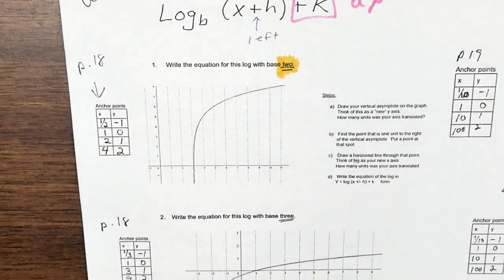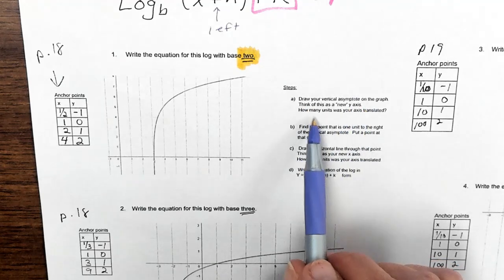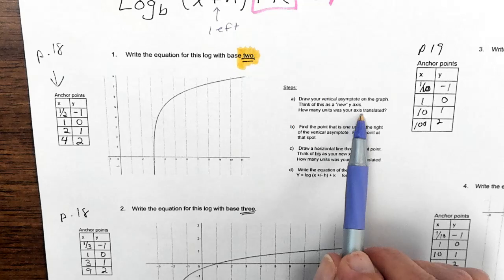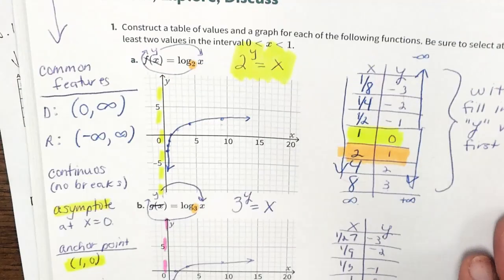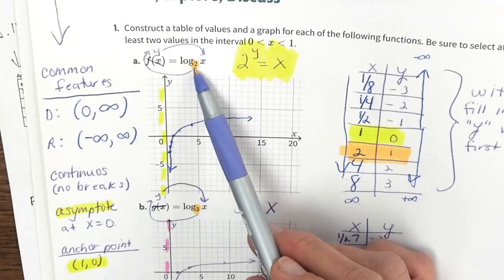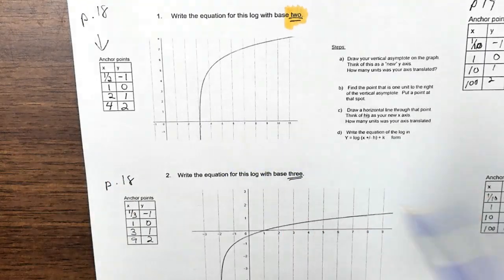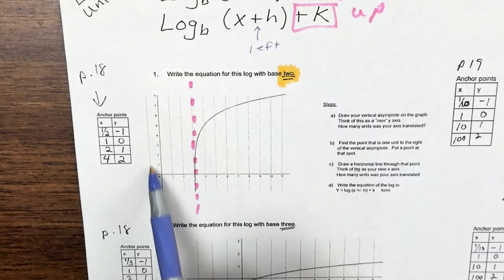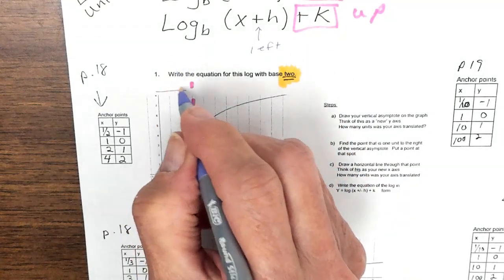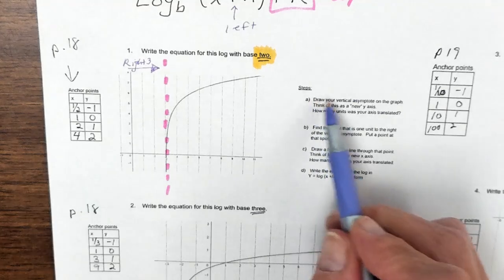The equation will have a base of two. Step one: draw your vertical asymptote on the graph — think of this as the new y-axis. Look at the homework graph from page 18 with base 2. Notice how the branch gets really close to the asymptote. This branch is getting really close to x equals 3, but it's usually on the y-axis, so we moved to the right three units. That's our vertical asymptote.